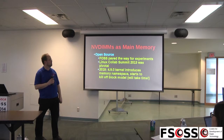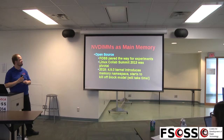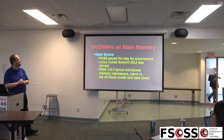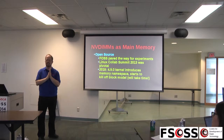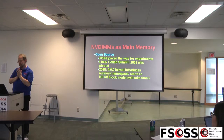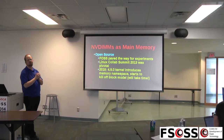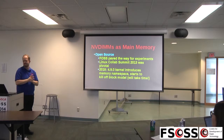How did open source play into this? Free and open source software played an important role in paving the way with experiments with this technology. The Linux Collaboration Summit 2013 — last year in your time frame — was a pivotal point in the discussion and implementation in the Linux kernel. Around 2018, the 4.9.0 kernel introduced a new type of memory namespace and we started to kill off the block model. We're still decades away from entirely killing it off, but we're on the road.